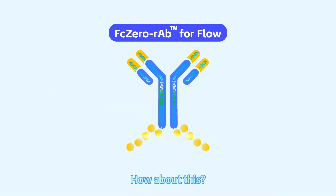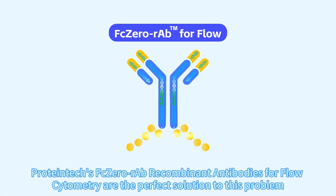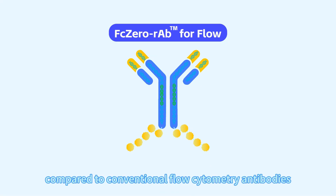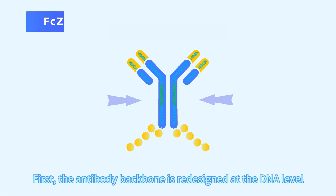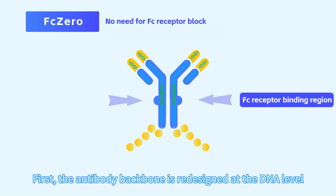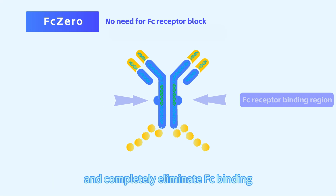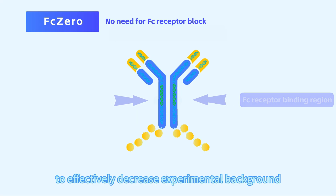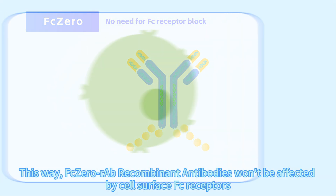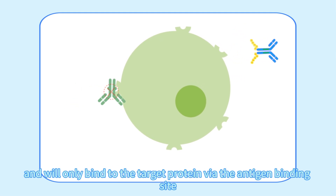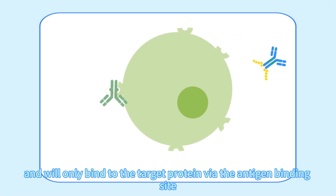ProteinTech's FCo-RAB recombinant antibodies for flow cytometry are the perfect solution to this problem. FCo-RAB antibodies are genetically engineered to have five main advantages compared to conventional flow cytometry antibodies. First, the antibody backbone is redesigned at the DNA level to silence the FC receptor binding region and completely eliminate FC receptor binding, to effectively decrease experimental background. This way, FCo-RAB recombinant antibodies won't be affected by cell surface FC receptors and will only bind to the target protein via the antigen binding site.